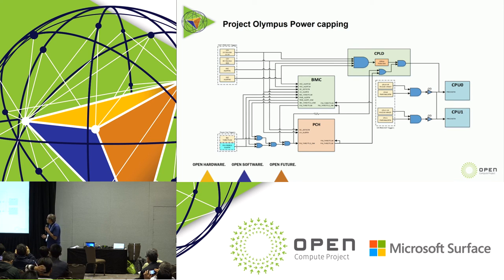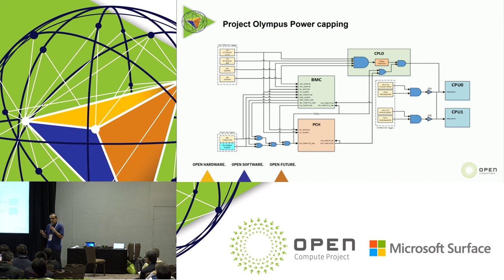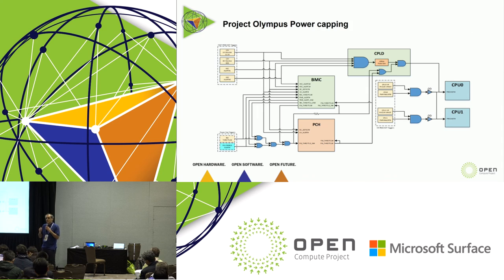The second mechanism is through the interaction between the BMC and Intel Node Manager. When we throttle the CPU, maybe we don't want to stay at the lowest frequency because of the performance impact. But we want to make sure we react to the power event quickly. So we do it through the fast proc hot first, and then the BMC sends a new policy to Intel Node Manager with the power budget defined by the rack manager or row manager at different levels. As Dave said, Intel Node Manager gradually ramps up to meet that power requirement, increasing frequency gradually to have minimum impact on the workload.